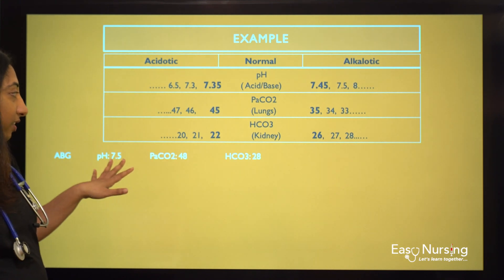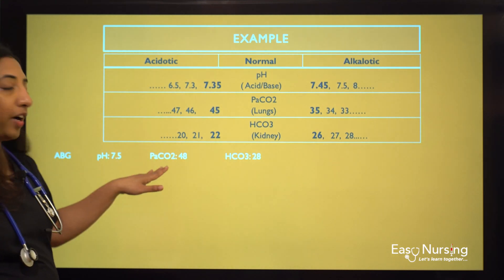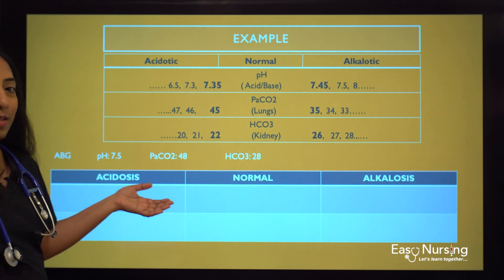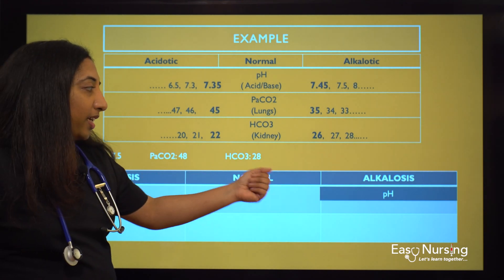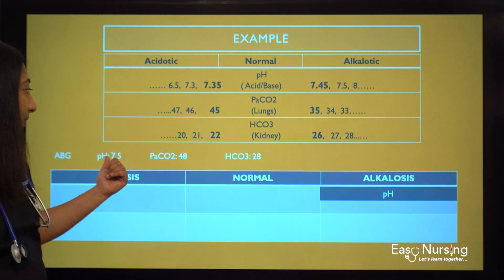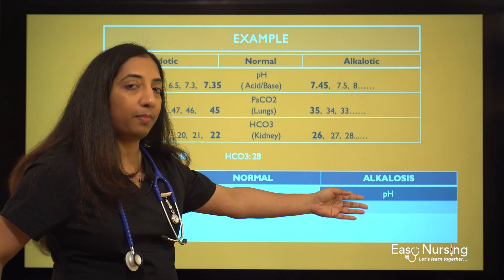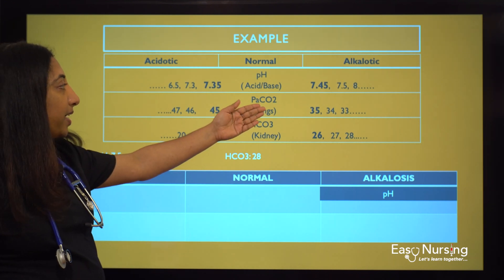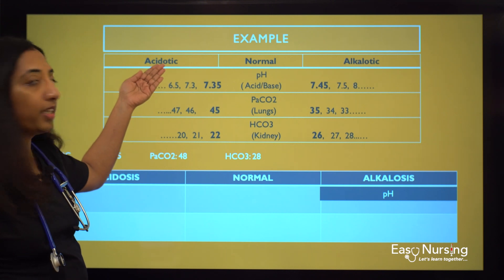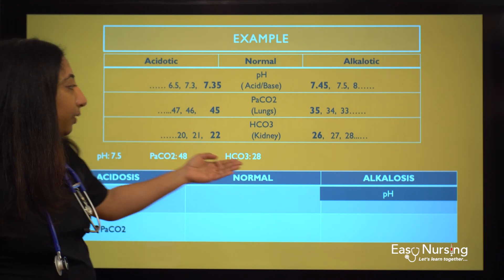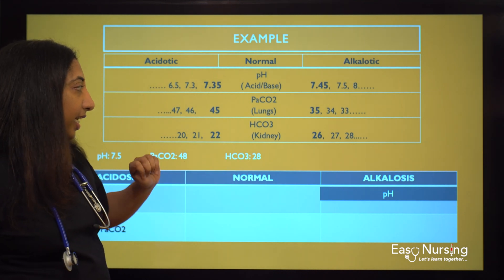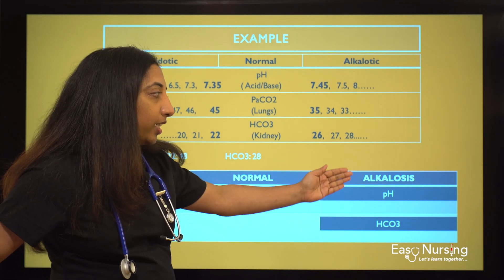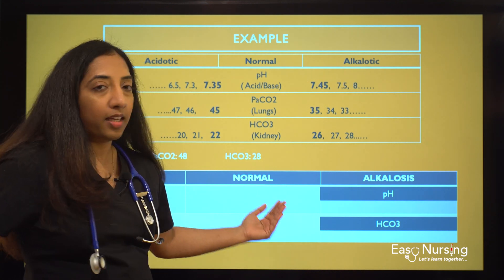Our first question: pH is 7.5, PaCO2 is 48, and bicarb is 28. Using our small table — pH 7.5 is above normal so it goes under alkalosis. PaCO2 of 48 is above 45, so it is acidotic and comes under acidosis. Bicarb of 28 is above 26, so it is alkalotic and comes under alkalosis.